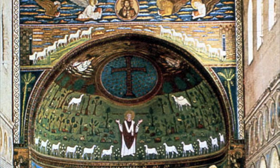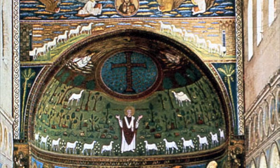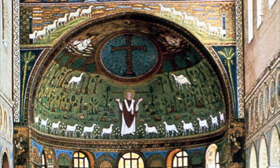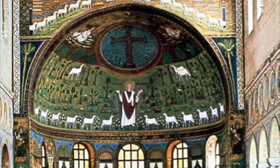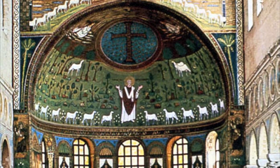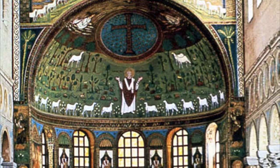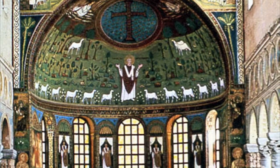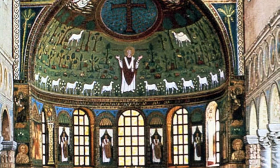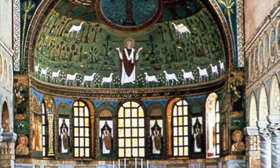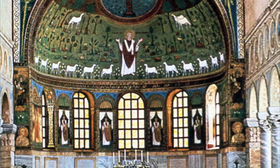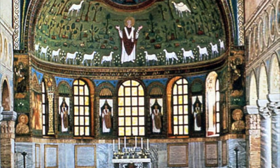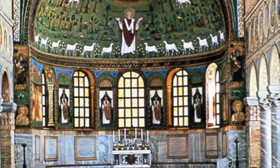Looking at the apse overall, you see it has a joined meaning with the altar below it. The priest would celebrate the sacrament of the Eucharist with the congregation, and each member would come up to the priest to receive the Eucharist. Directly above them they would see this large saint and cross, signifying the true meaning and importance of the death of Christ.